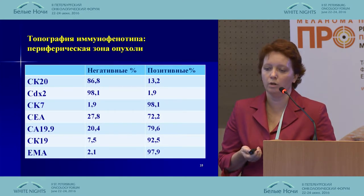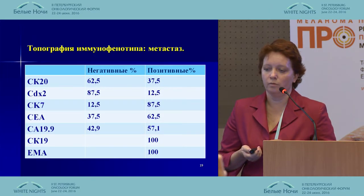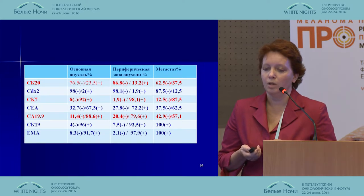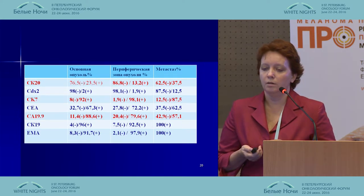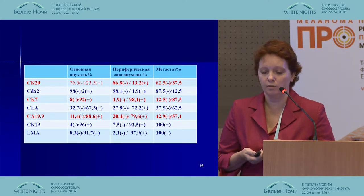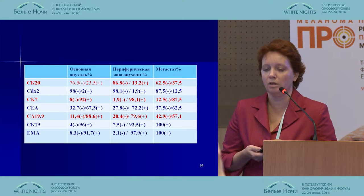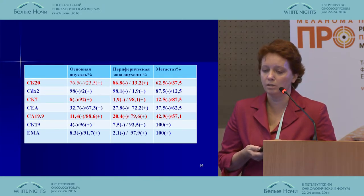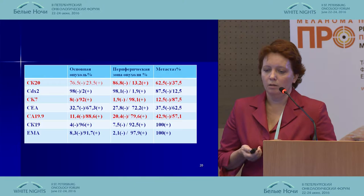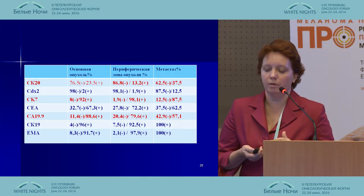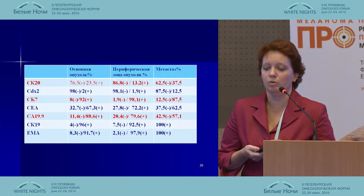The left column shows negative results and the right one shows positive results in percent. In the metastatic tumor, we got quite the same results. The bigger difference — more than 10% — between different zones of tumors was found in cytokeratin 20, CK7, and CA19-9.